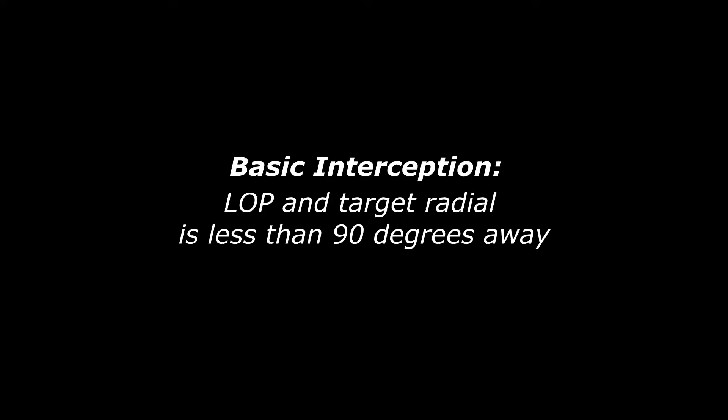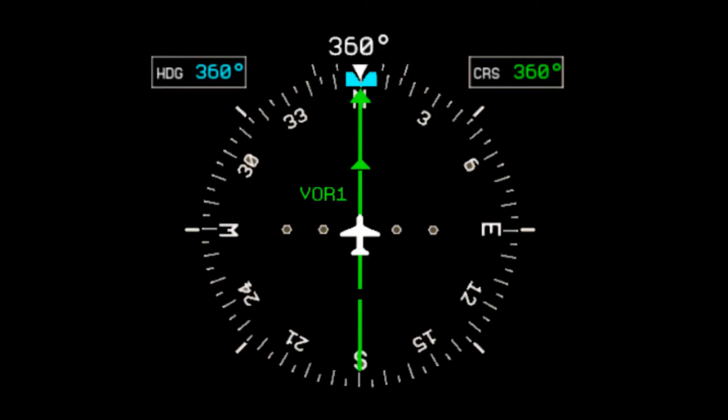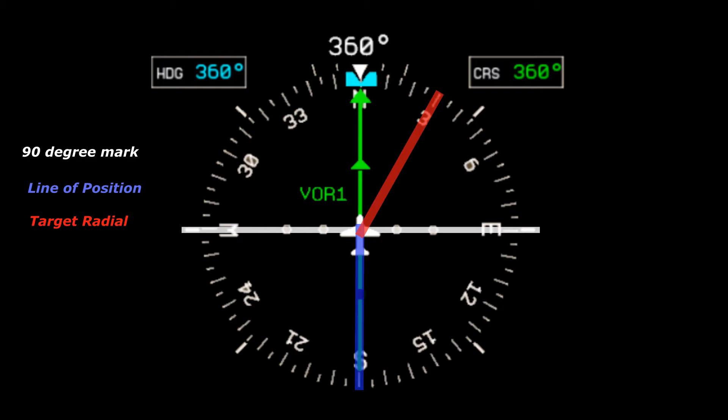Next is the difference between basic and boxing interception. Basic interception is used if your LOP and the target radial you'll be intercepting is less than 90 degrees away. Boxing is used if the radial you're targeting is more than 90 degrees away. A good way to determine this is to use your heading indicator. Draw a line between your 90-degree points, identify your LOP, then identify the target radial. If the target radial falls within the half of your radial, it's basic interception. If it falls outside of it, it's boxing.